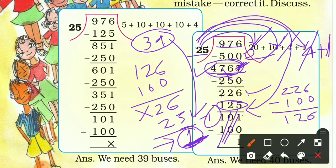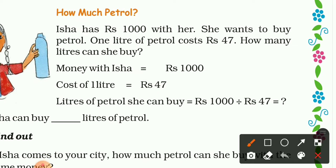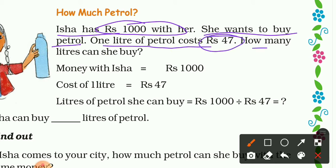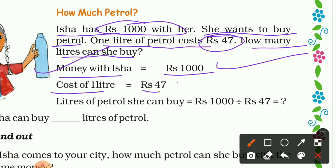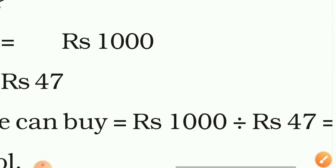Now come to the next topic: 'How Much Petrol.' Isha has 1000 rupees. One liter of petrol costs 47 rupees. How many liters can she buy? The solution: money with Isha is 1000 rupees, cost of one liter is 47 rupees. So we divide 1000 by 47 to find how many liters of petrol she can buy.